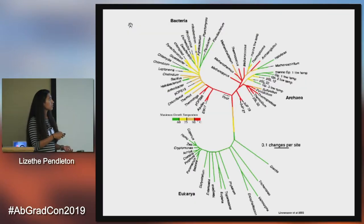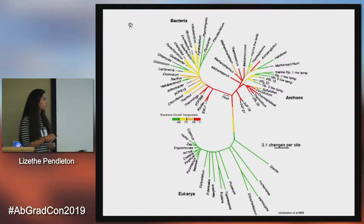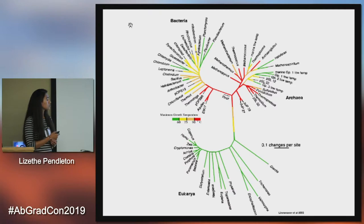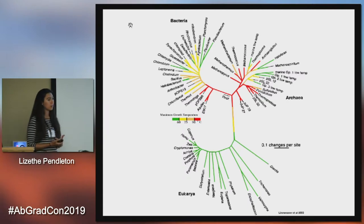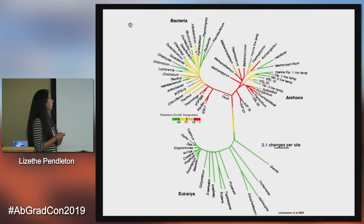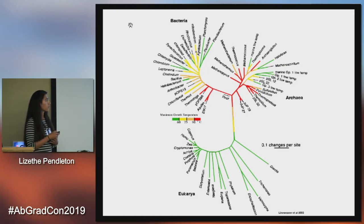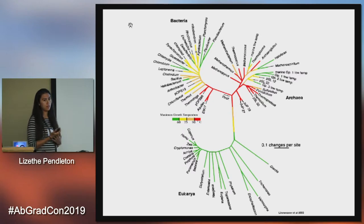This is the same tree shown earlier, but as you can see with the colors, this shows the maximum growth temperature. Green is up to 60 degrees Celsius, yellow is up to 75, orange is up to 90, and anything red is 90 degrees Celsius and above. Within the eukarya domain, it's mostly green — eukaryotes are mesophiles, meaning they prefer more mild growing temperatures. Bacteria have a bit more color diversity, so they're a little more thermo-tolerant. And as I mentioned, archaea are typically extremophiles, and you can see a lot of organisms in there that like hot temperatures.